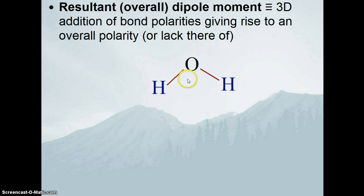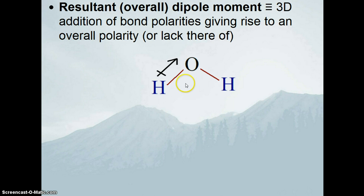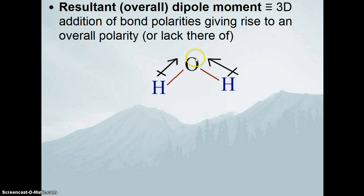Here is a water molecule. We know there's a lone pair here and a lone pair here, and that water has an electron domain geometry of tetrahedral and a molecular geometry of bent. We're going to look at the bond dipoles — since we're looking at bond polarities, we ignore the lone pairs. If we draw a bond polarity for hydrogen and oxygen, we know oxygen is more electronegative, so there's a polar bond drawn in the direction of the oxygen with a little crosshair showing the positive end. The other hydrogen also has a positive end with the arrow pointing towards the oxygen.